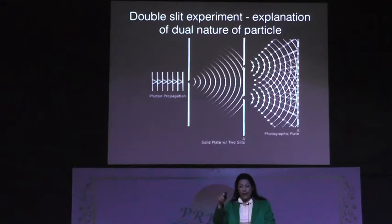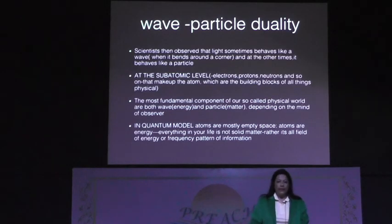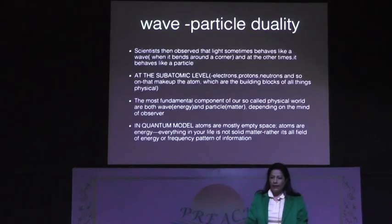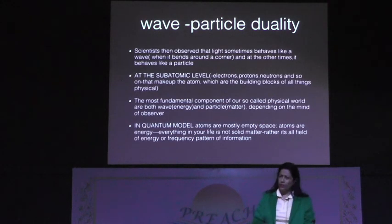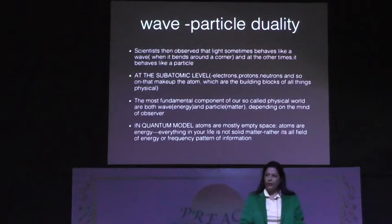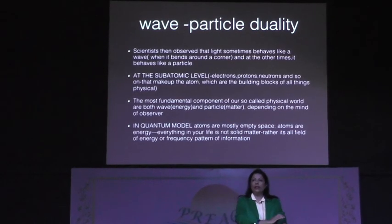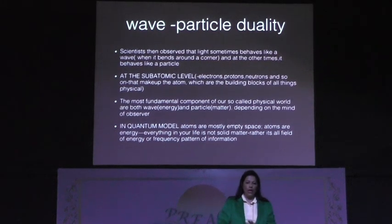Wave particle to energy. Scientists observed that light sometimes behaves like a wave when it bends around a corner, and at other times it behaves like a particle. At the sub-atomic level — atomic, electron, proton, neutron, positron, and other components — that's made of atoms, which are the building blocks of all physical things. In quantum physics there are subatomic particles. The most fundamental components of our so-called physical world are both wave and particle.